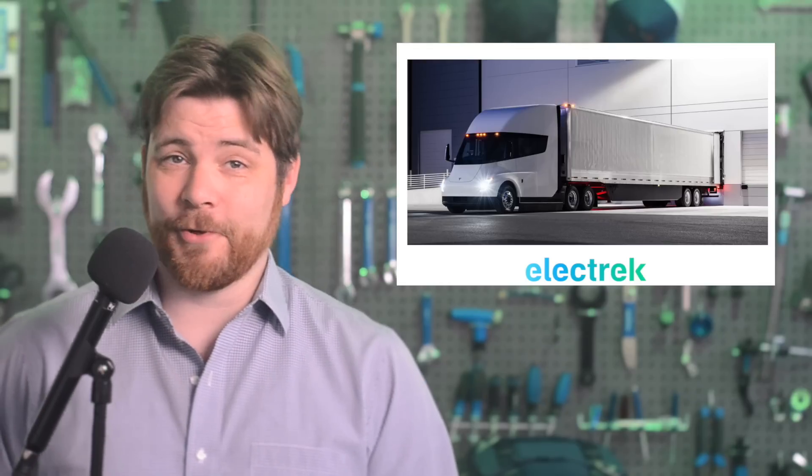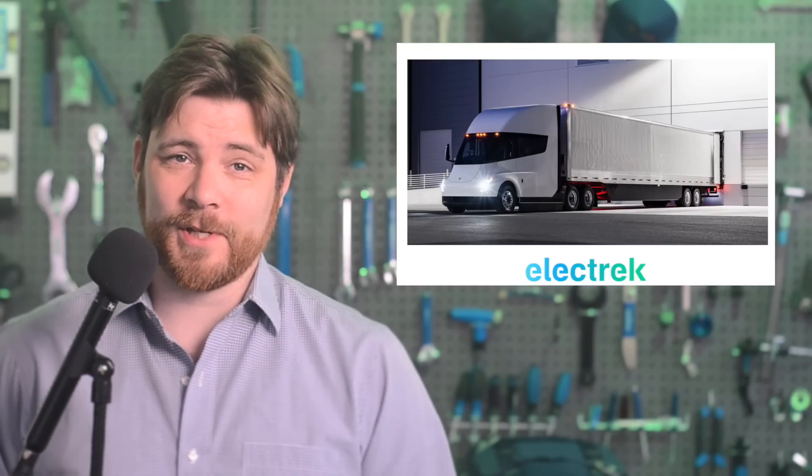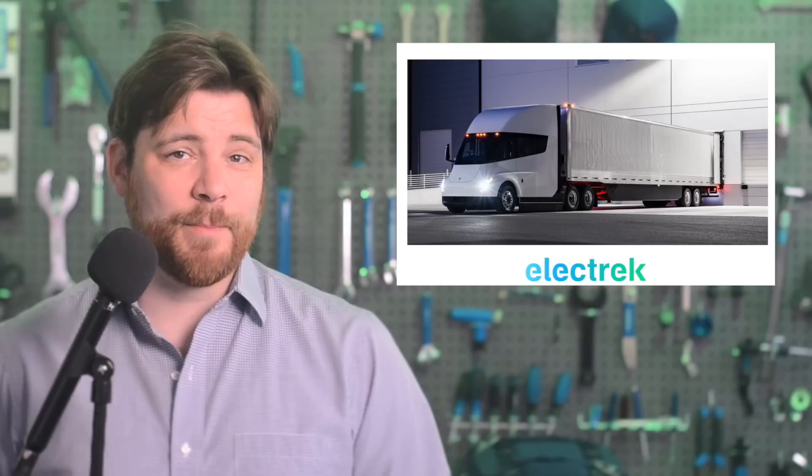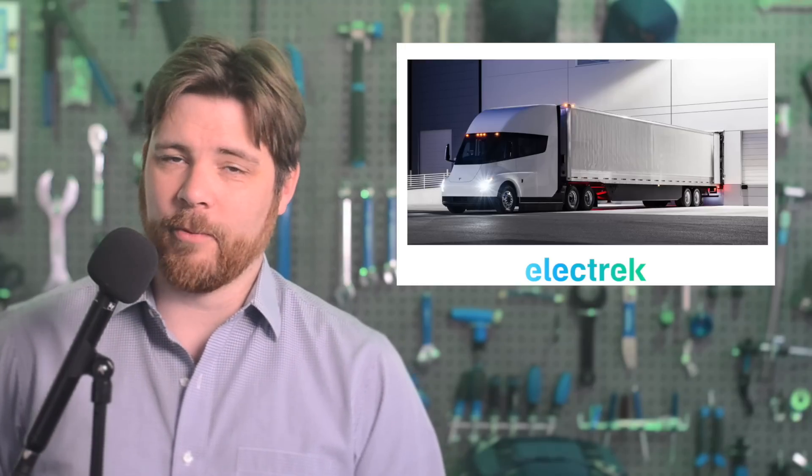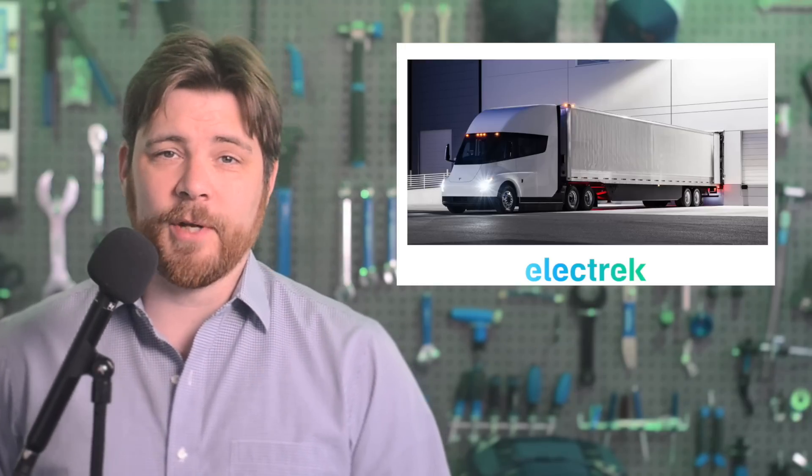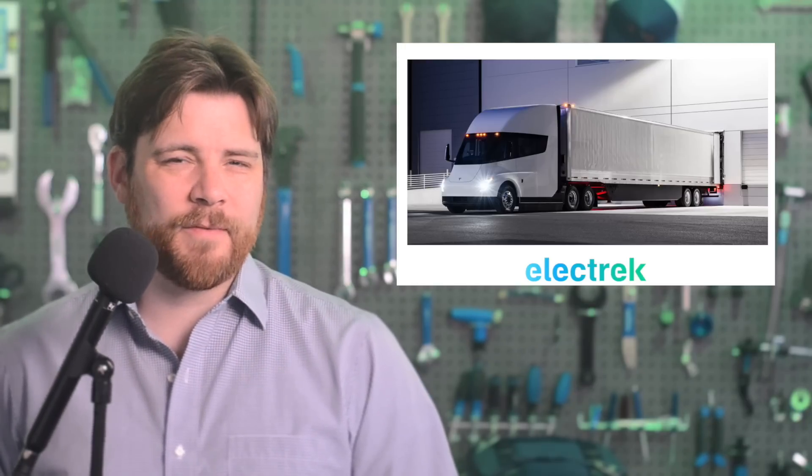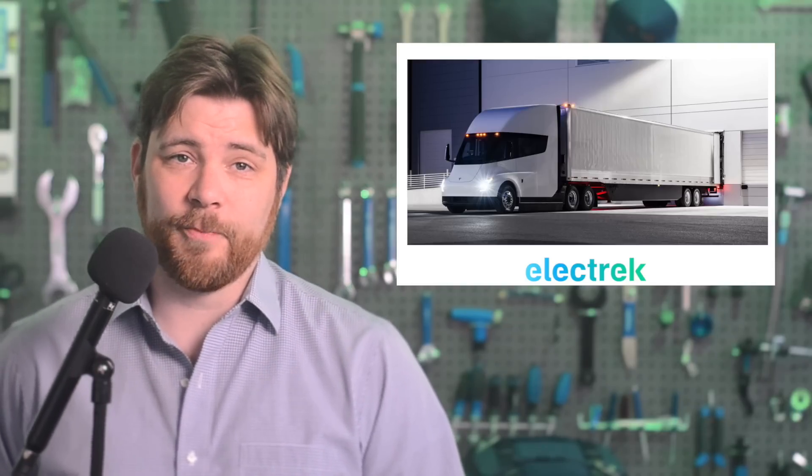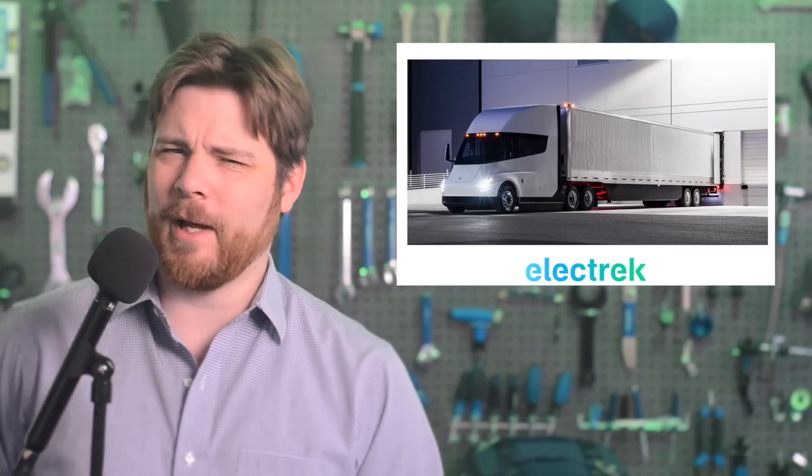That roughly matches the 36 vehicles that Tesla's first customer, PepsiCo and its subsidiary Frito-Lay, were said to be deploying. On Wednesday, we reported on the latest update on semi production and noted that the delivery volume was still a big question. We heard about deliveries to Pepsi and Frito, but other than that, we haven't heard a whole lot of other clients.